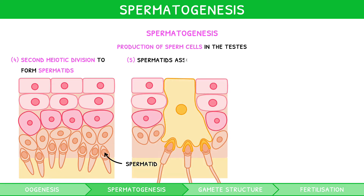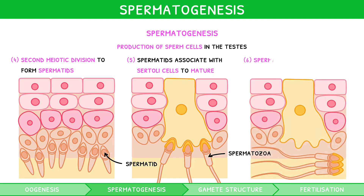Spermatids then associate with Sertoli cells, where they mature and develop a tail. At this point they are called spermatozoa, also known as sperm. Spermatozoa then detach and leave the seminiferous tubules through the fluid-filled centre of the tubule.